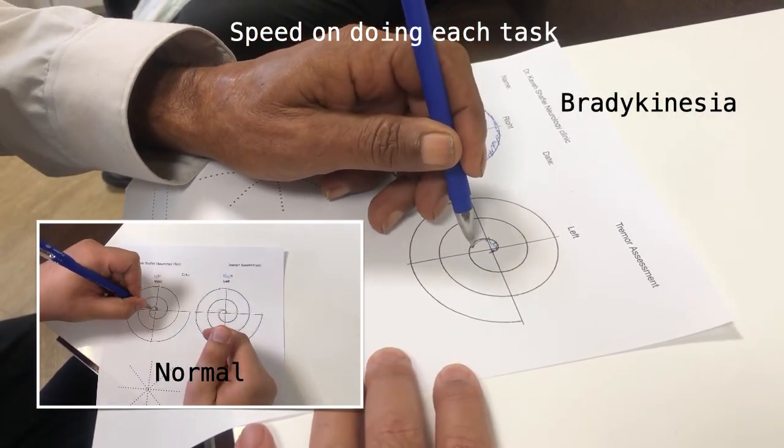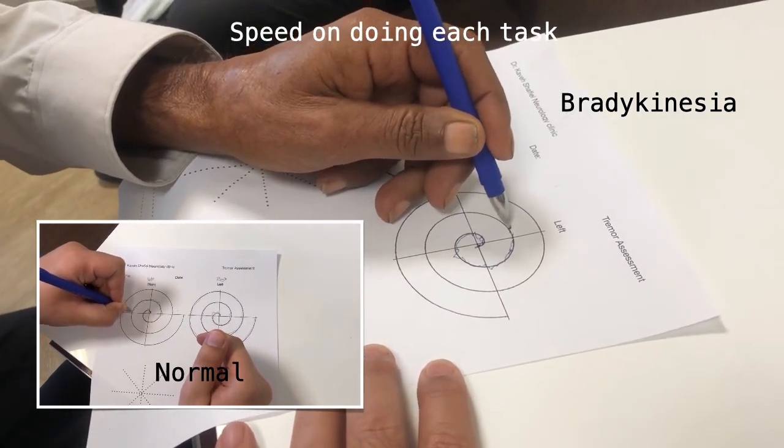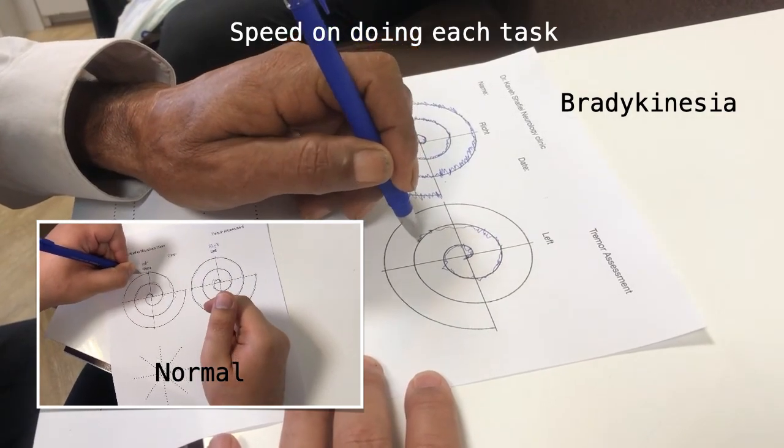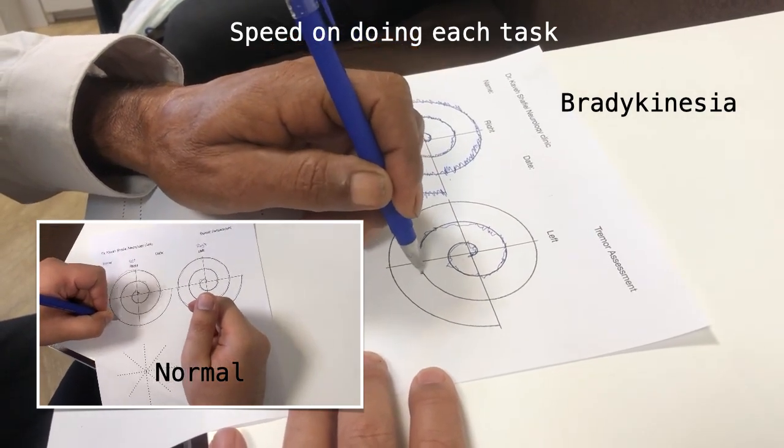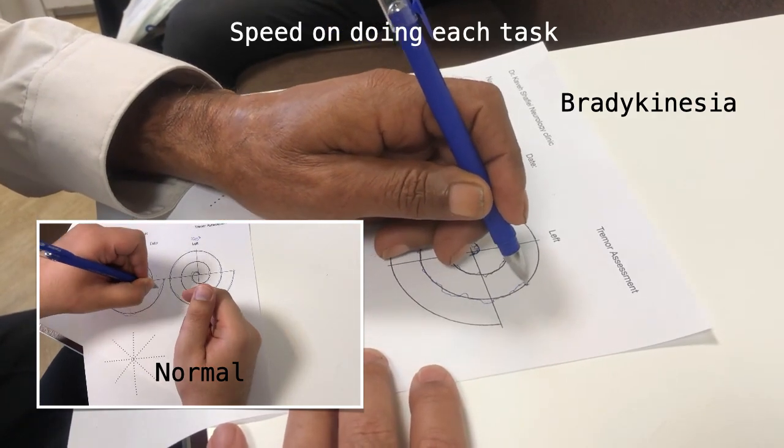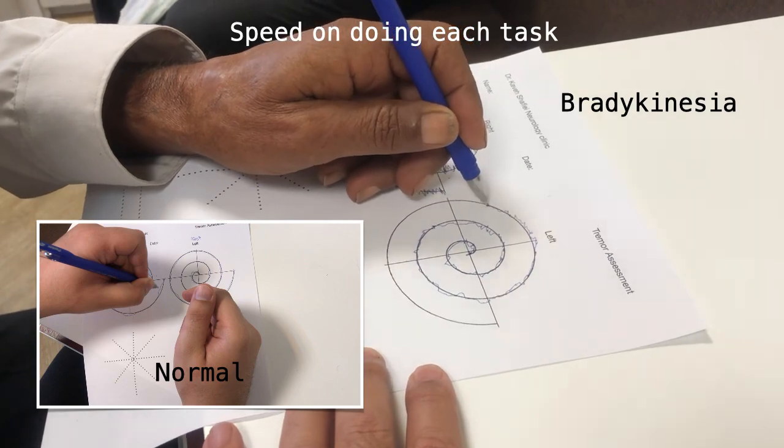Like any other aspect of Parkinsonian syndrome, bradykinesia can be picked up during spiral drawing. As you can see in these two videos, Parkinson's disease patients have slower drawing during spirals.